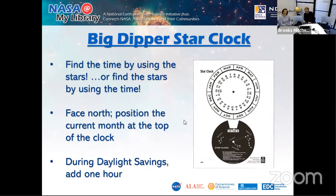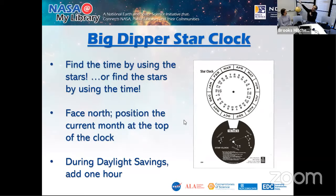We're going to start with a simple activity called Big Dipper Star Clock. It's fun and easy — something you could do even a week ahead of your night sky viewing to build interest, or right before. The basic idea is that you construct a little clock and use the location of the Big Dipper to find out what time it is, or vice versa — use the time and month to find where the Big Dipper is. Even on a cloudy night, you can still make the clocks and figure out where the Big Dipper would be.